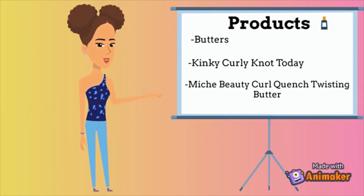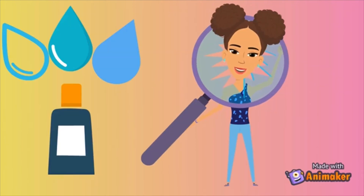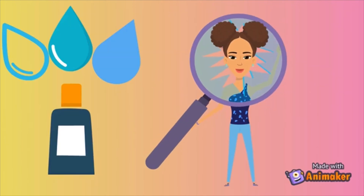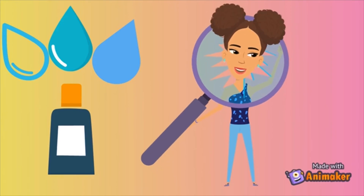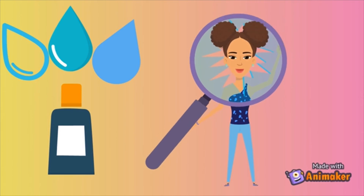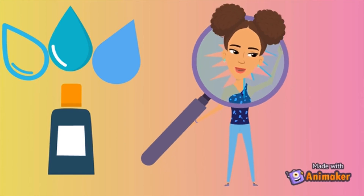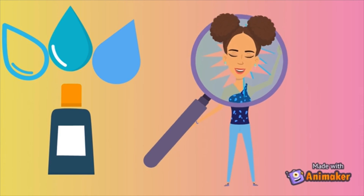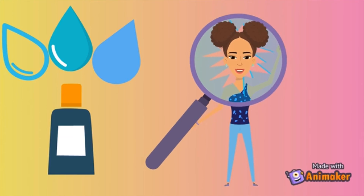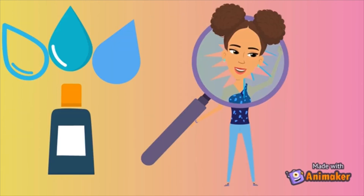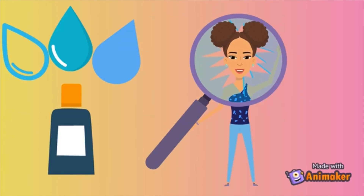Quick recap: with low porosity hair, it's difficult for moisture to enter but hard for moisture to escape. With medium porosity, your hair is basically perfect — and I personally think medium porosity hair is a myth. With high porosity hair, it's easy for moisture to penetrate but moisture also easily escapes.